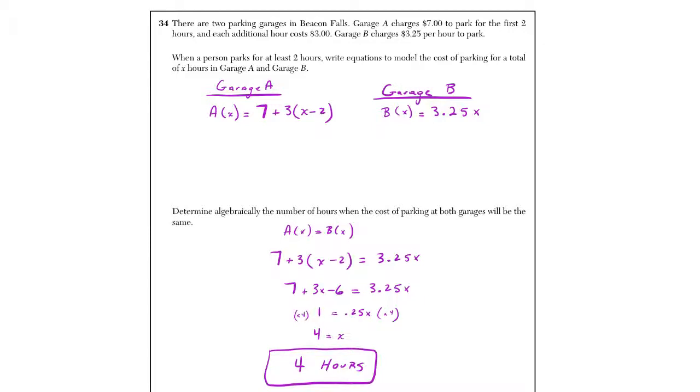So let's look at garage A. Garage A's deal was $7 to park for two hours. Not for each hour, but for two hours, it's only seven bucks. And then every hour after that costs $3.